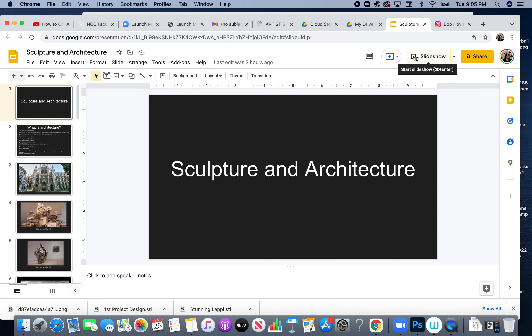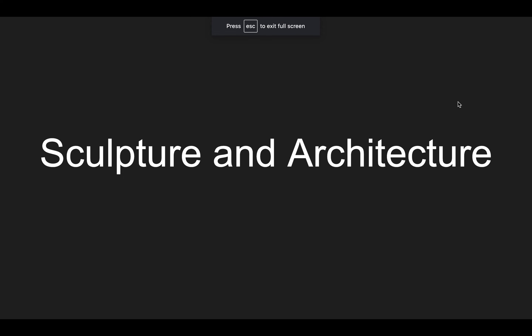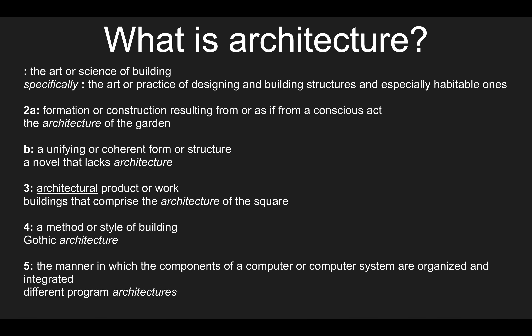The first thing we want to think about is the relationship between sculpture and architecture. Sculpture involves three-dimensional forms or objects of some kind. Let's start by defining what architecture actually is. The Webster's Dictionary version says it's the art or science of building — specifically the art or practice of designing and building structures, especially habitable ones. A second definition describes it as a formation or construction resulting from a conscious act, as in the architecture of a garden, or a unifying, coherent form or structure.